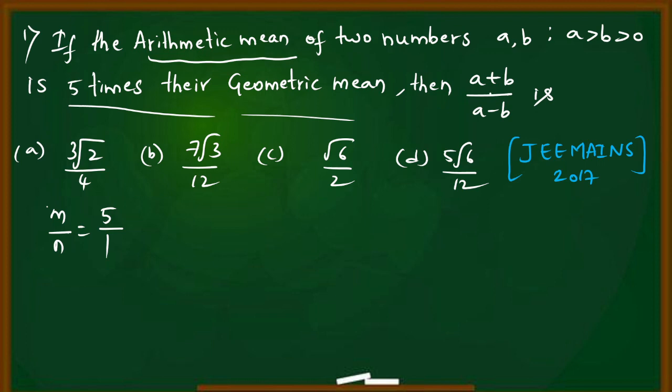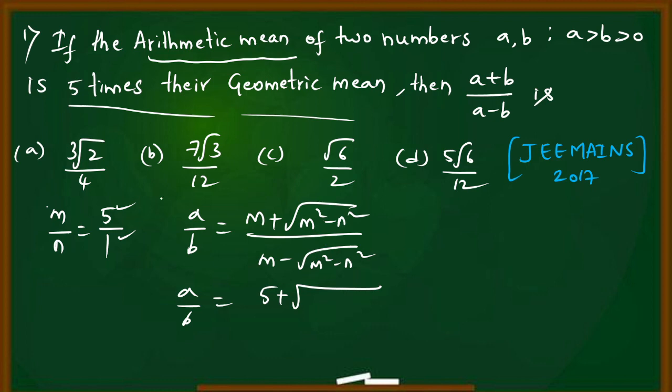We need to find (a+b)/(a-b). First we'll use the formula: a/b = [m + √(m²-n²)] / [m - √(m²-n²)]. Substituting m² = 25 minus n² = 1, we get 24. So it becomes [5 + √24] / [5 - √24].